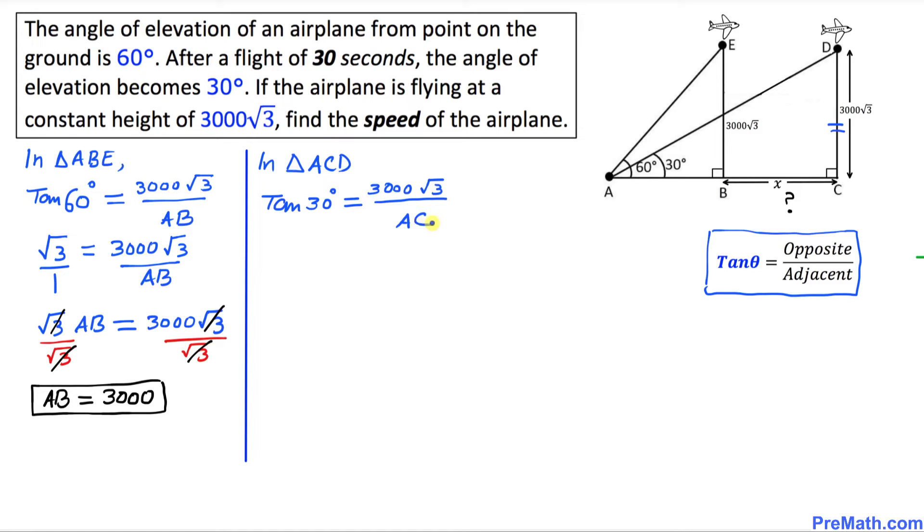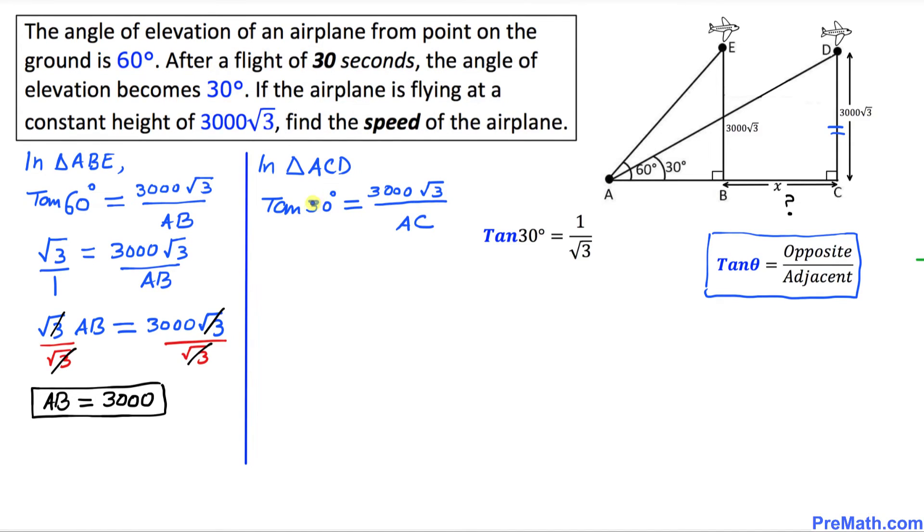We know that tan(30°) is 1/√3, so I can replace it by 1/√3 = 3000√3/AC. Now we are going to cross multiply. If we do this, 1 times AC equals √3 times 3000√3.